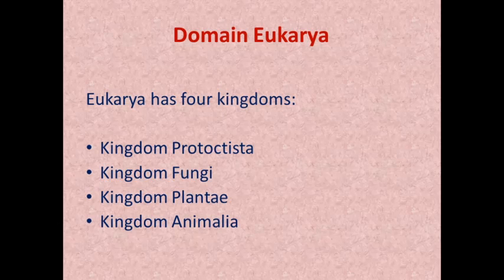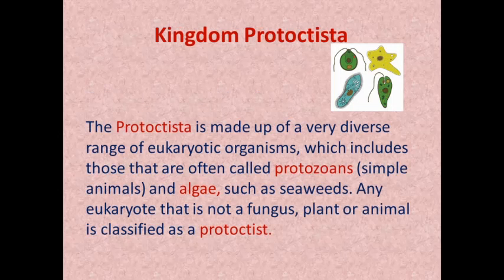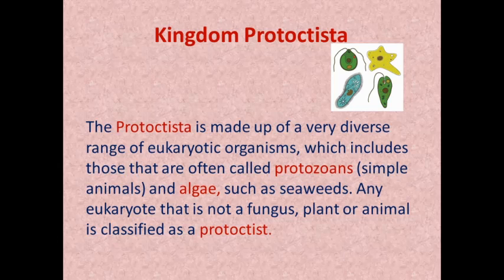In this lesson I will explain kingdom Protocytista. As you can see in the diagram, four organisms are shown: Chlamydomonas, a green organism with two flagella; Amoeba; Paramecium, the blue one; and Euglena, a green organism with a single flagella. Euglena is the most complex — it sometimes behaves as an animal and sometimes as a plant.